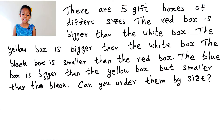And the black box is smaller than the red box — that means the red box is over here. And the yellow box is bigger than the white box.